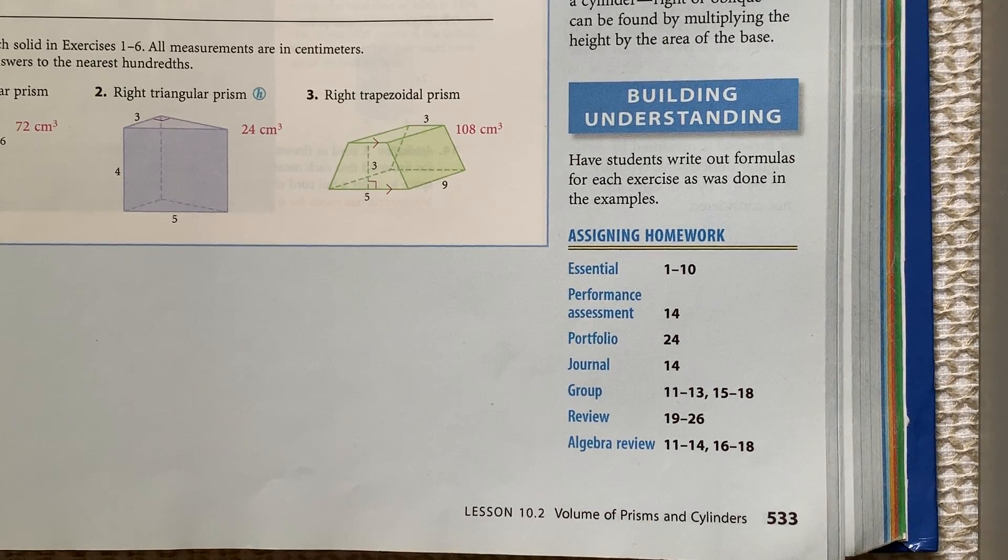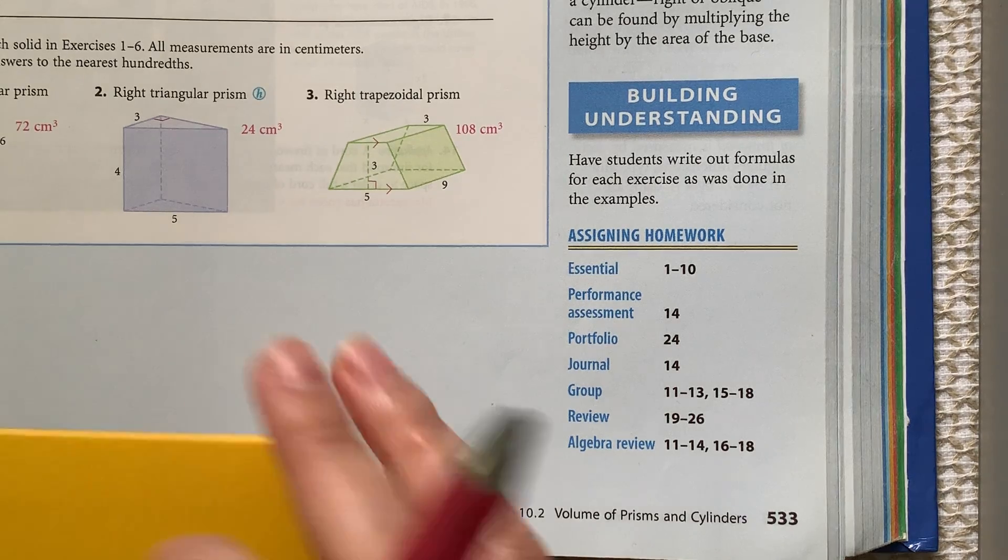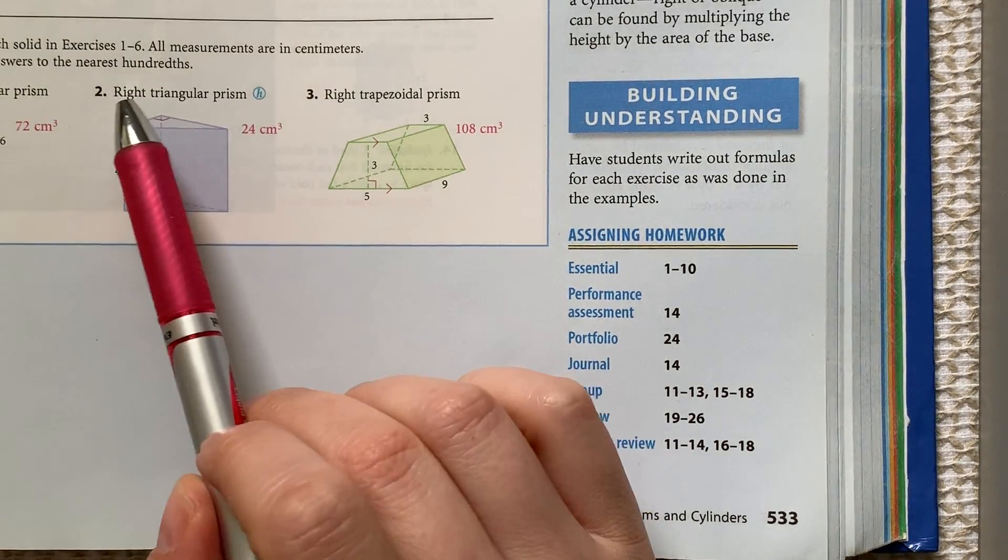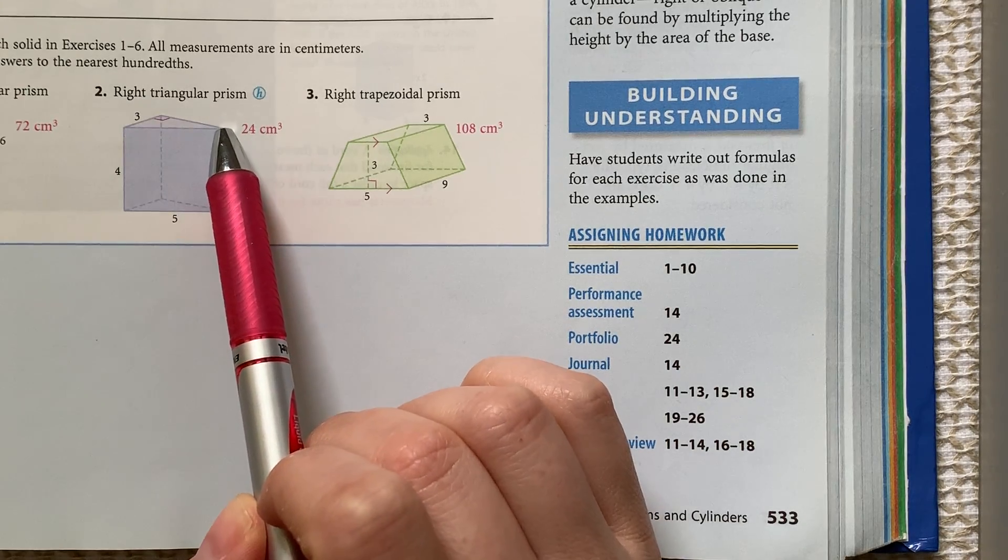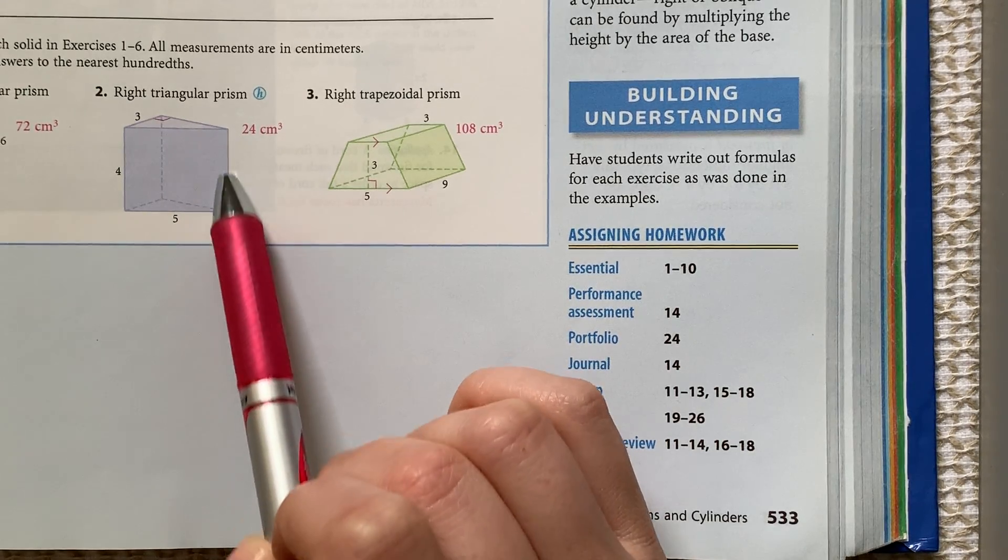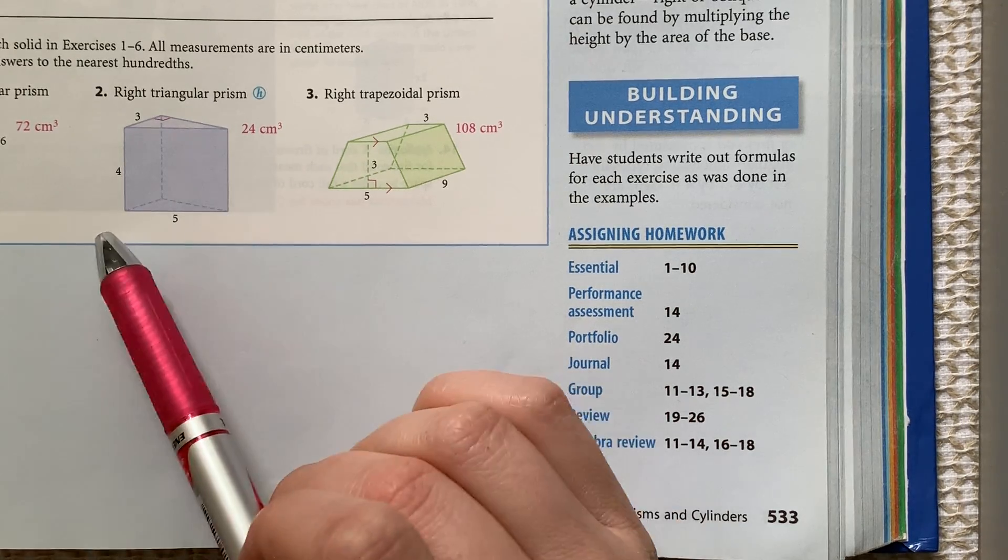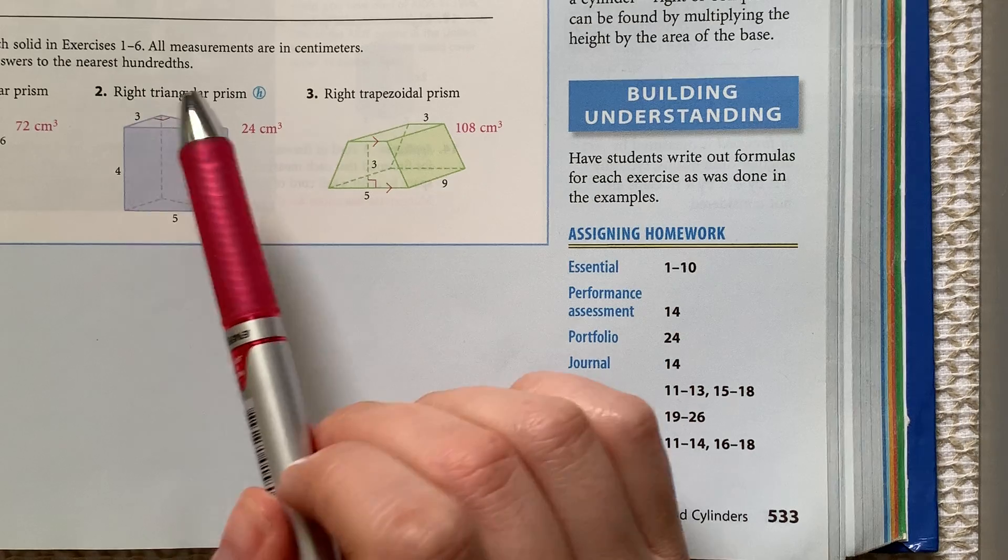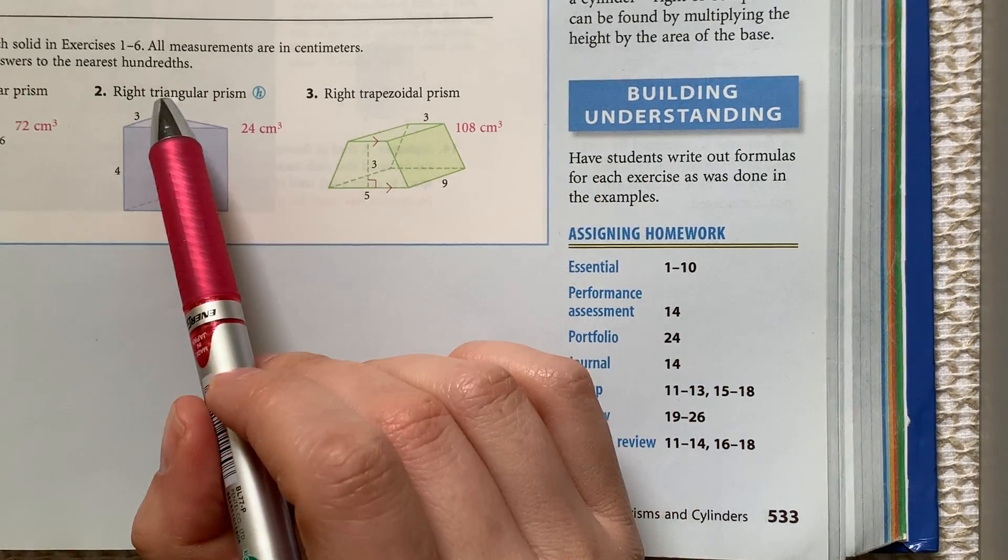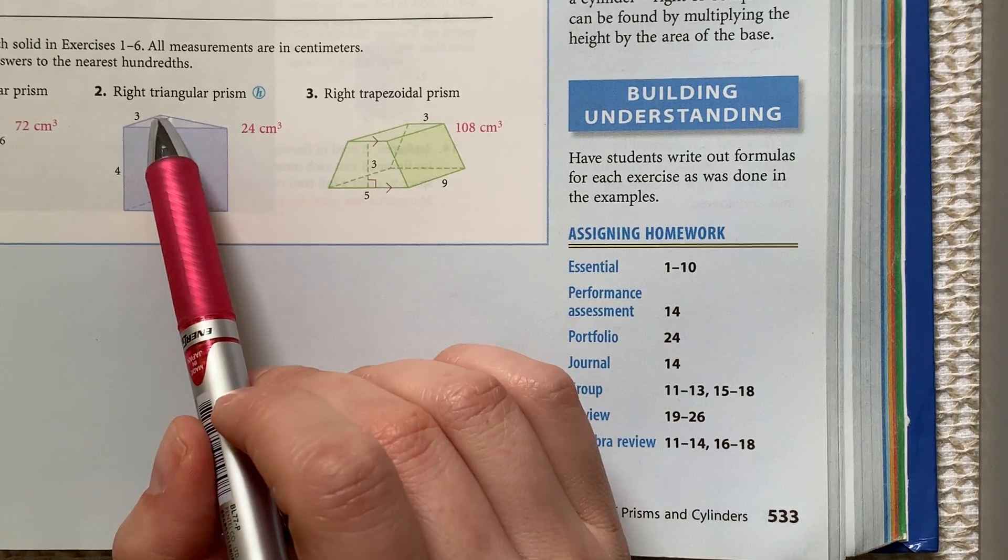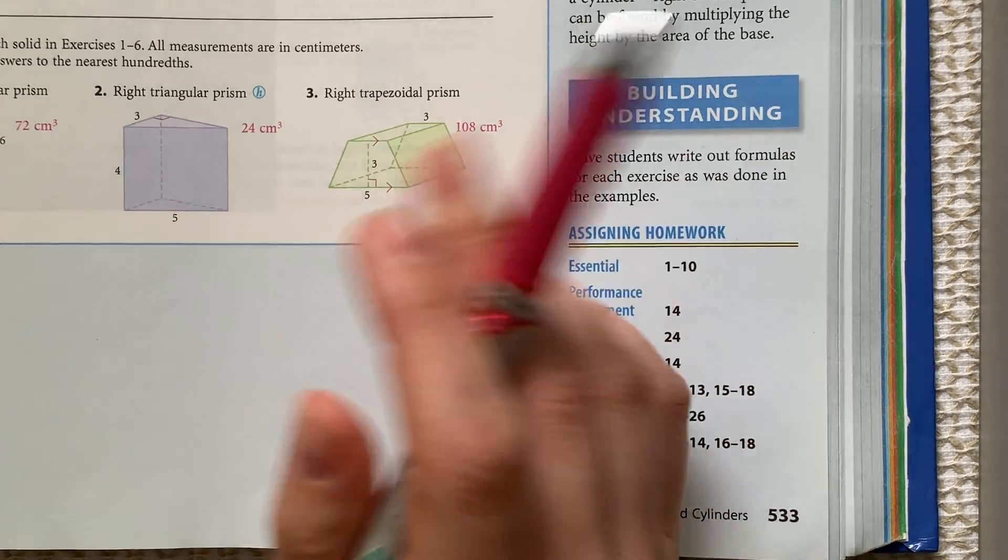This is page 533, number 2. You can see that we have a right triangular prism. The right means that the lateral edge is an altitude or a height, meaning that the lateral edge is perpendicular and we have rectangles here for the lateral faces. And the triangular is the name of the bases. So we have a triangle as the base and then we have a prism.